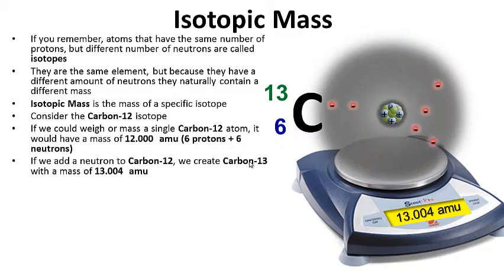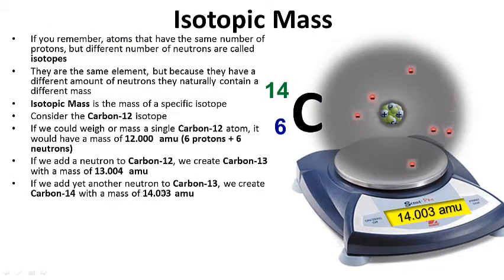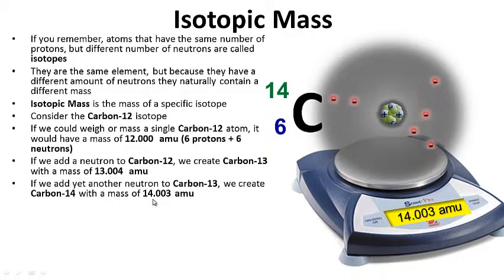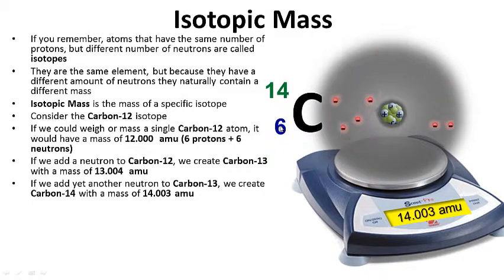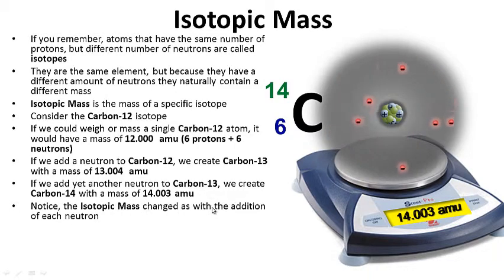If we add another neutron to carbon-13, we create carbon-14 with a mass of 14.003 AMU. Notice the mass number and atomic number: the number of protons remains 6, which doesn't change, and the number of neutrons becomes 8. The isotopic mass changed with the addition of each neutron.